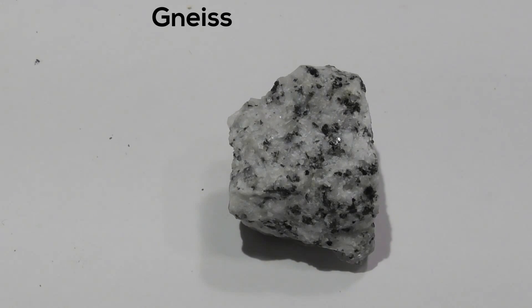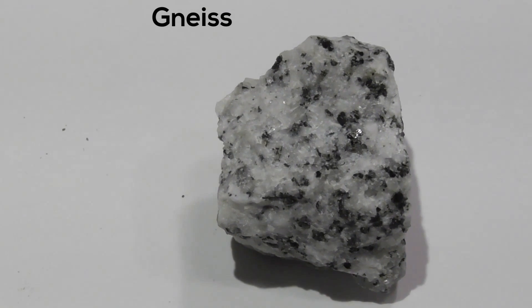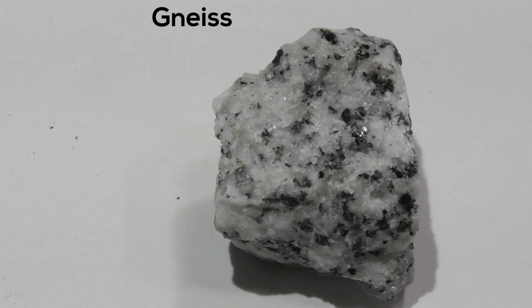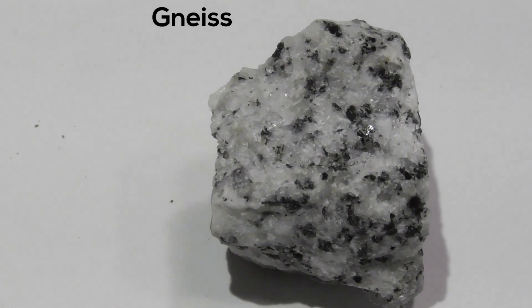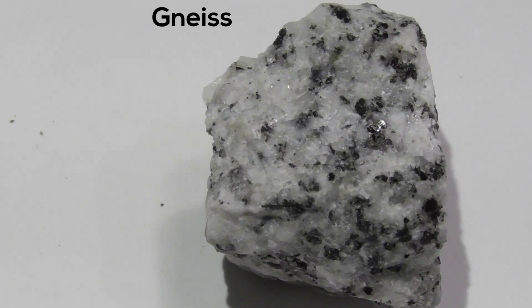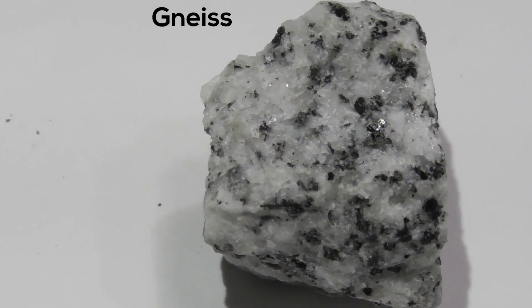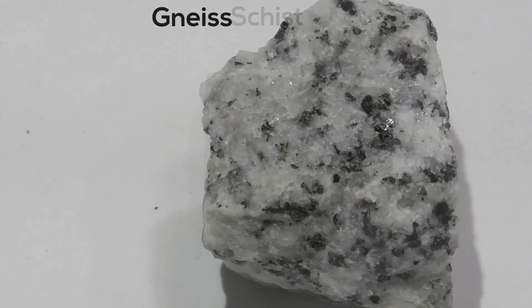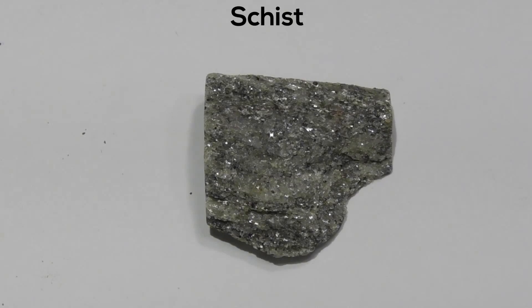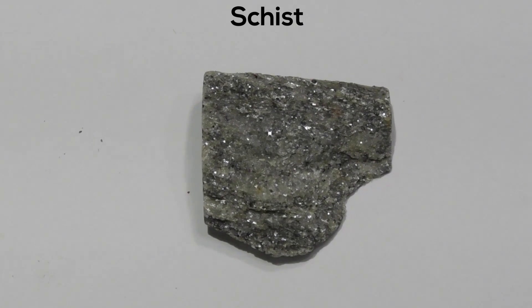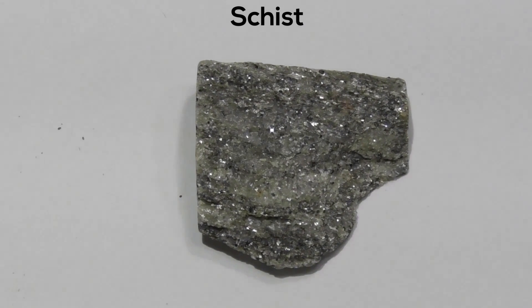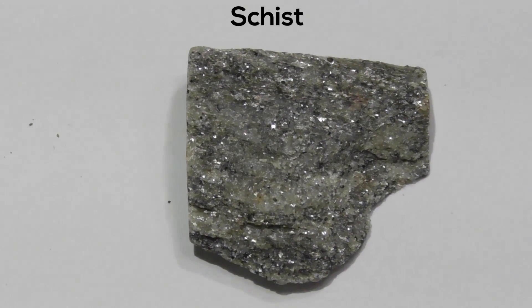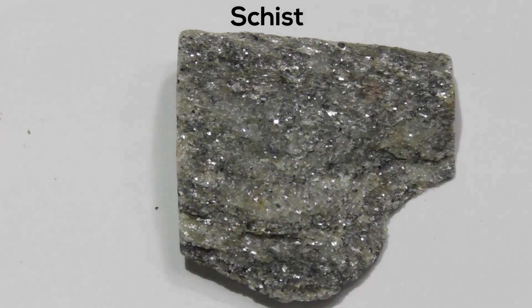Gneiss is a foliated rock and its parent rock is schist. And finally, schist is a foliated metamorphic rock and its parent rock is slate.